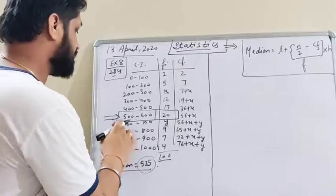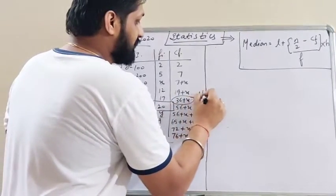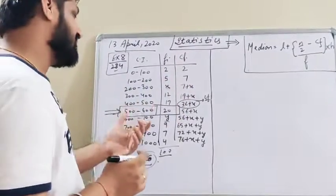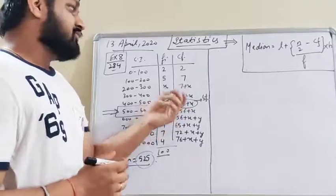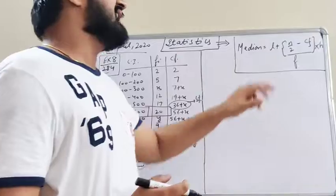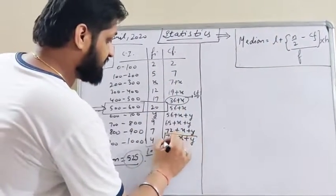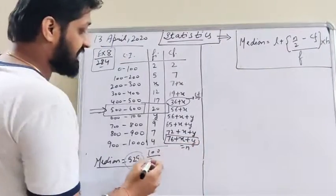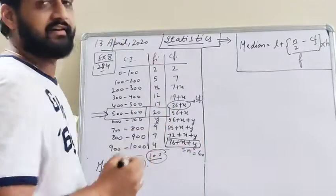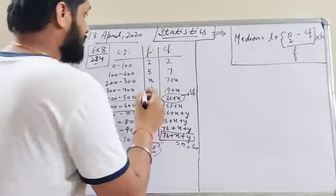Since 500–600 is the median class, the cumulative frequency just above the median class is 36 plus x. The formula for median is: L plus (n/2 minus cf) divided by f, multiplied by h. Here L is the lower limit of the median class, n is the sum of frequencies which equals 100, h is the class size, and f is the frequency of the median class, which is 20.